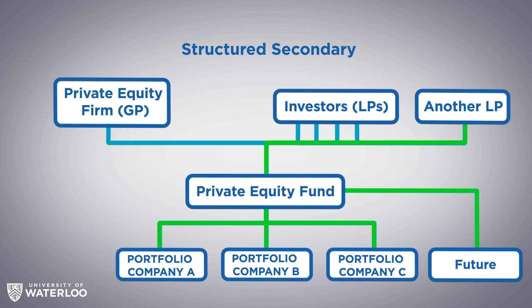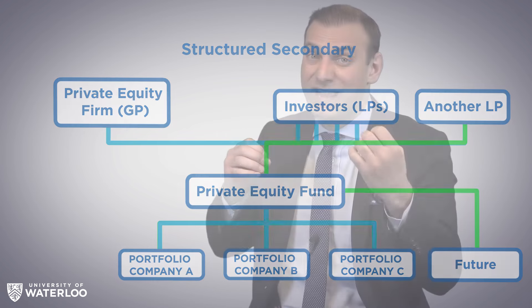Or it can do something called a structured secondary, where it sells different parts — for example, keeping the existing investments and just selling the future commitments. And just as easily as an investor can sell a secondary in private equity, it can also buy one as well.